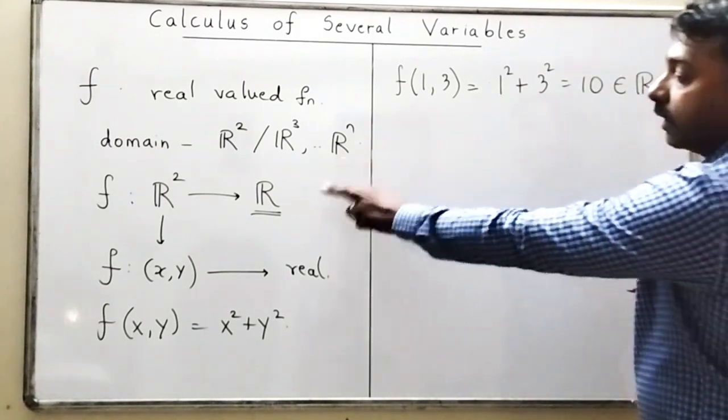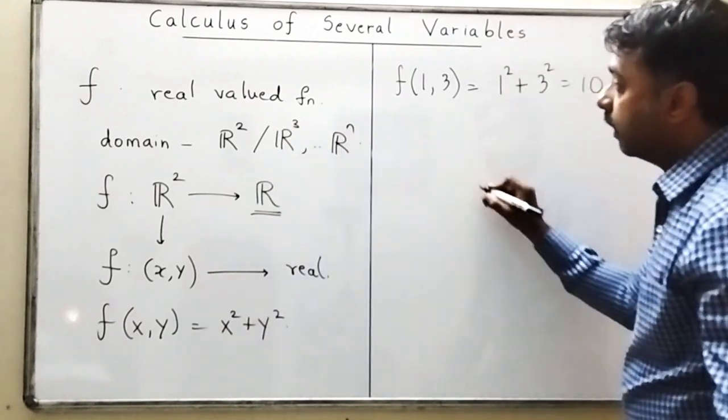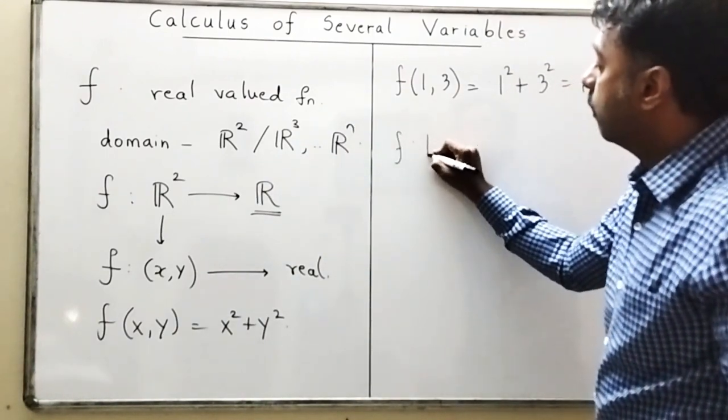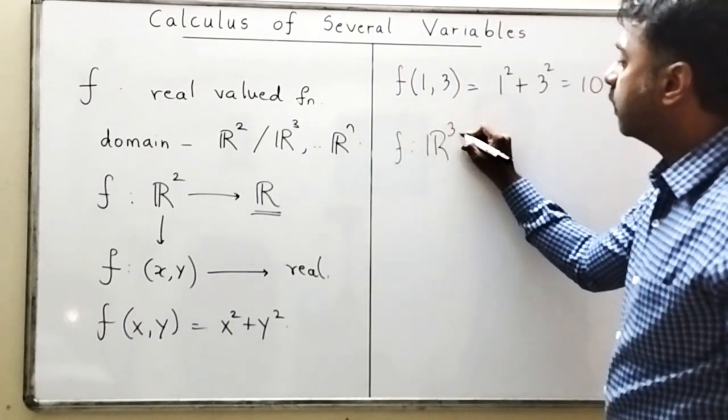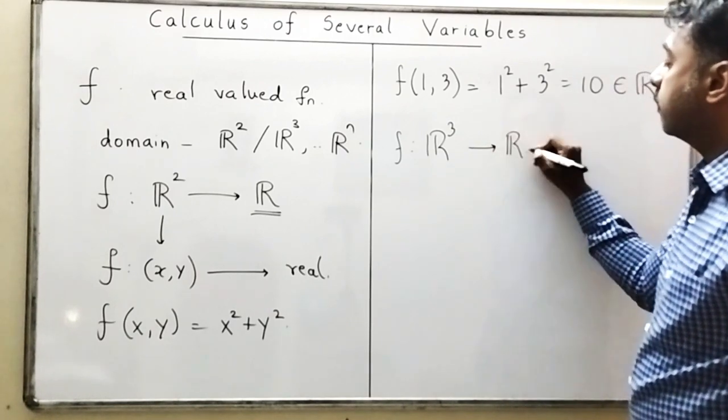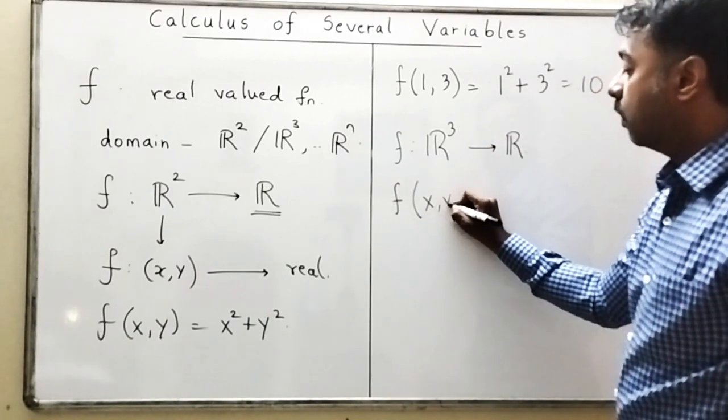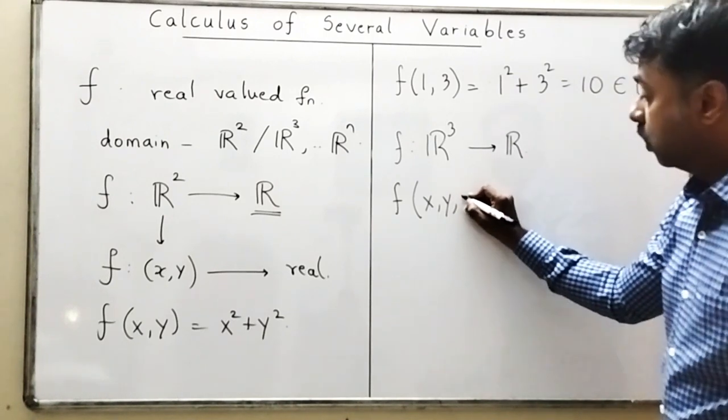So this is a function which is of this type. Let me take one function f from say R³ to R. This means f(x,y,z). Now R³ has three coordinates so it is x, y, z.